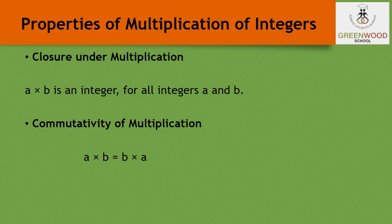Now we will learn about the properties of multiplication of integers. First, closure property: if we multiply any two integers, the answer is always an integer. Also, commutative property holds — multiplying a times b or b times a gives the same answer. So both closure property and commutative property are applicable for multiplication of integers.